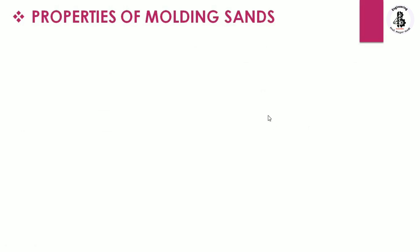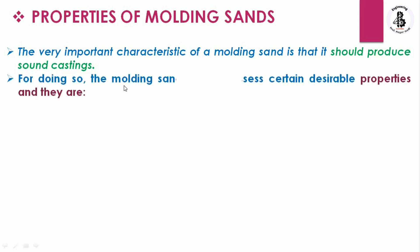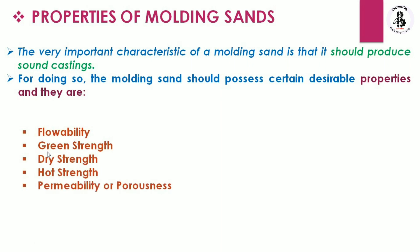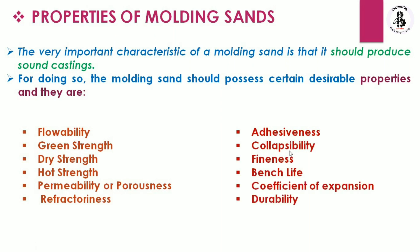A very important characteristic of molding sand is that it should produce sound castings. For this, the molding sand should possess certain desirable properties: good flowability, green strength, dry strength, hot strength, permeability, porousness, refractoriness, adhesiveness, collapsibility, fineness, bench life, coefficient of expansion, and good durability.